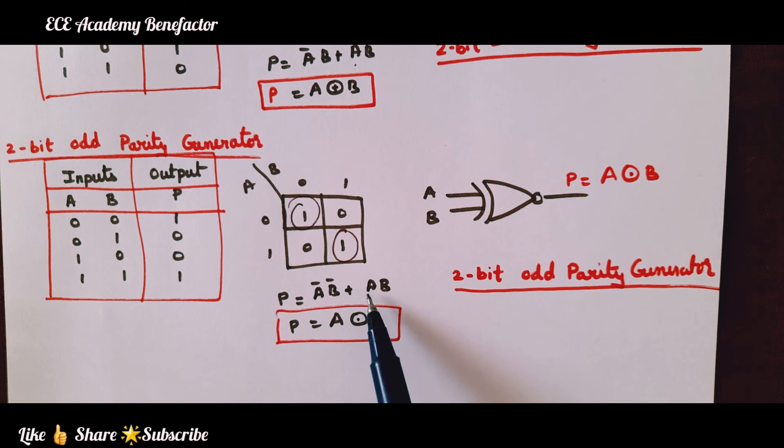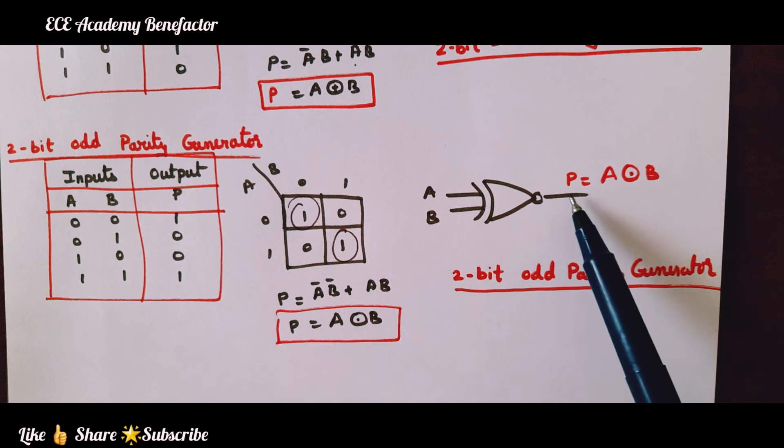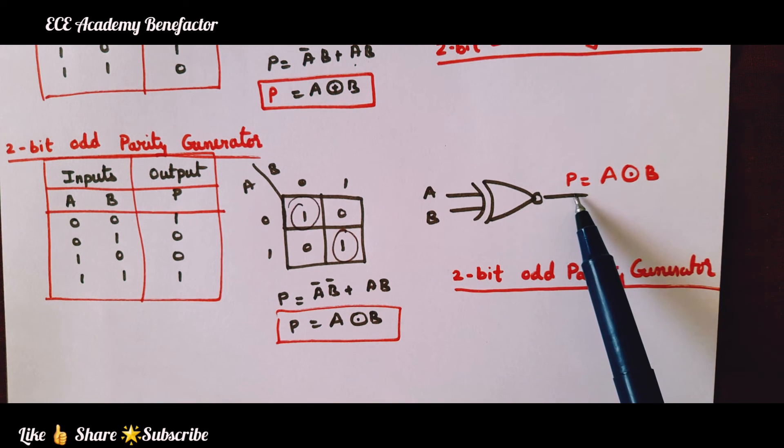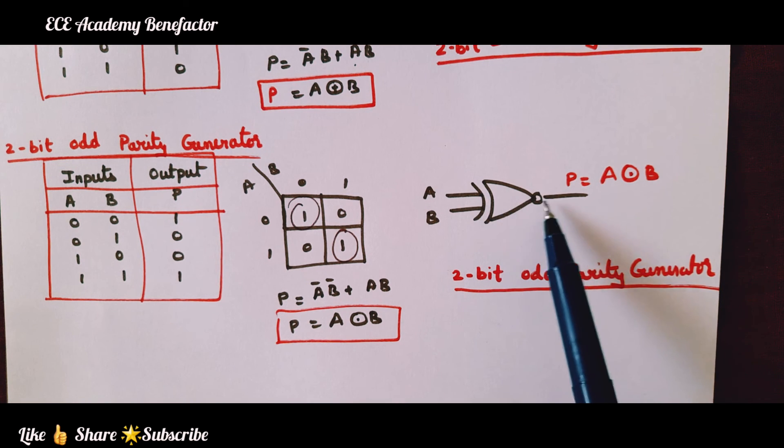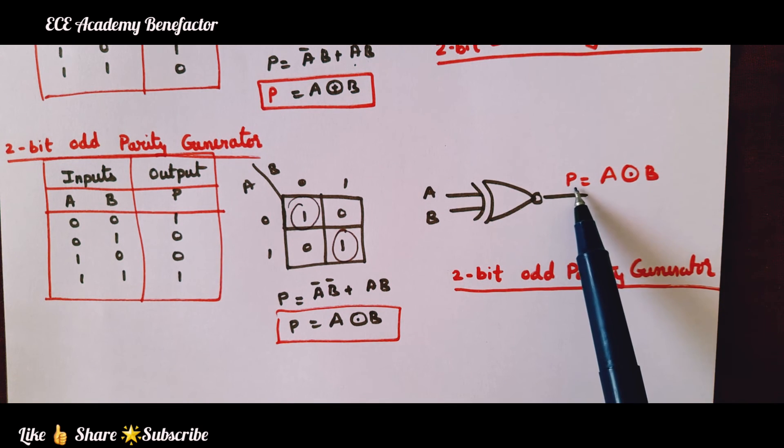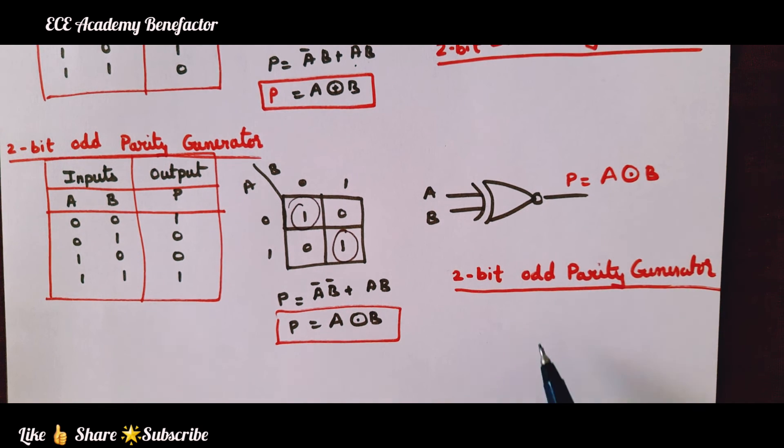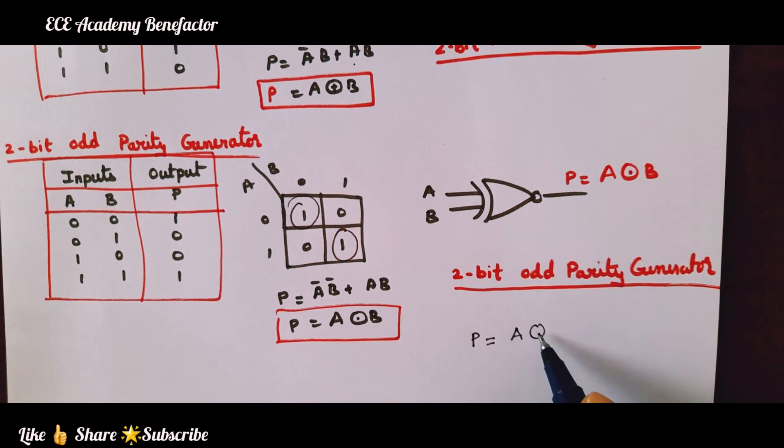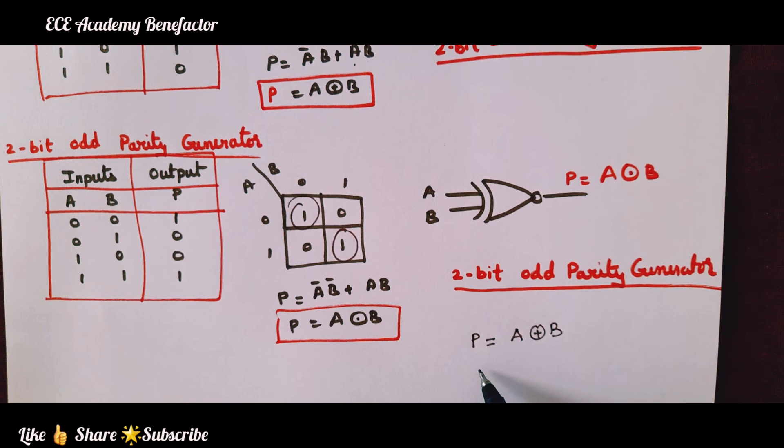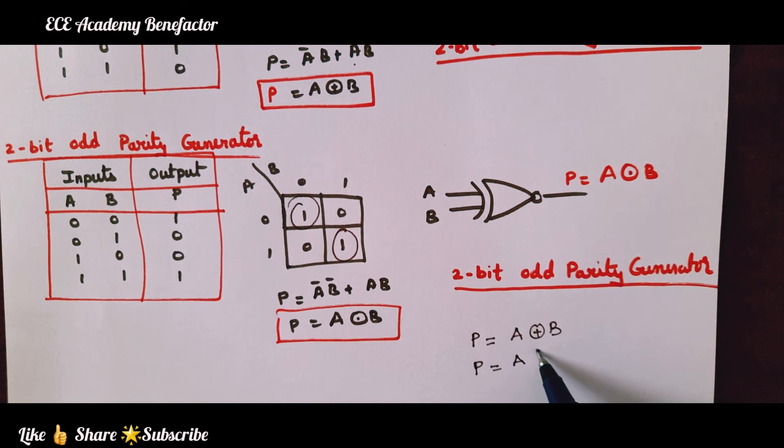This is an XNOR gate, A XNOR B. Odd parity generator is designed using XNOR gate. The inputs A and B are given to an XNOR gate to generate a 2-bit odd parity generator. For even parity generator the equation is P equals A XOR B, and for 2-bit odd parity generator the expression is A XNOR B.